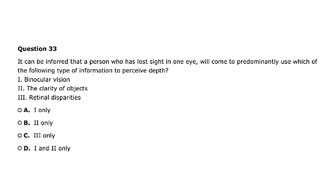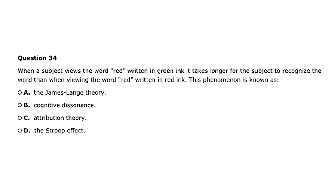Question 33: It can be inferred that a person who has lost sight in one eye will predominantly use which type of information to perceive depth? Roman numeral I: binocular vision. Roman numeral II: clarity of objects. Roman numeral III: retinal disparities. Options I and III both rely on having two eyes, so answer II — clarity of objects — is the only one you can use with one eye. Answer is B, Roman numeral II only.